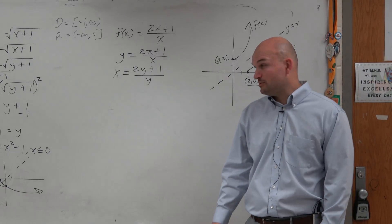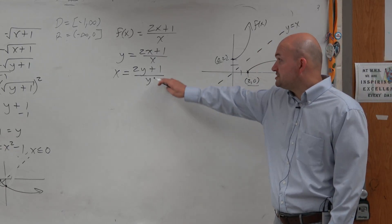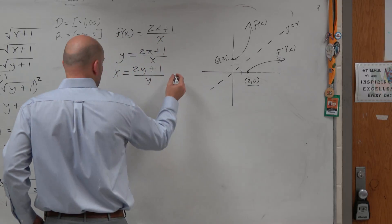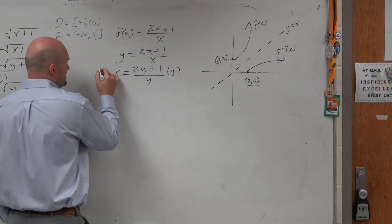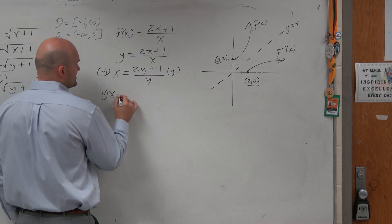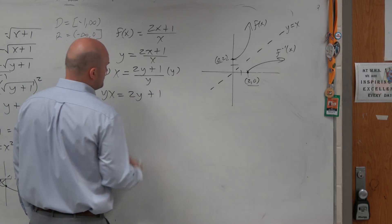So this is where students usually have trouble, because there's two y's. Well, the first thing, guys, is we have to get the y off the bottom, so I'm going to multiply by a y on both sides. So yx equals 2y plus 1.